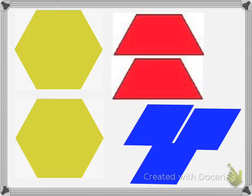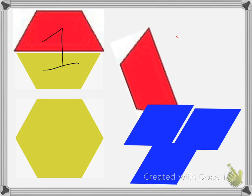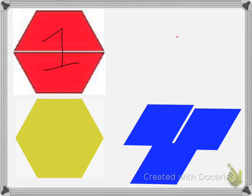With the red pattern block, if my yellow block equals one, then I'm going to try to figure out how many red trapezoids it takes to fill in my yellow hexagon. So there's one, still not full, so I'm going to put this one in by twisting it around. Two.